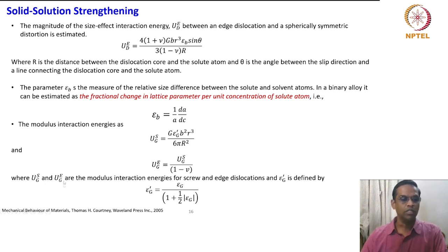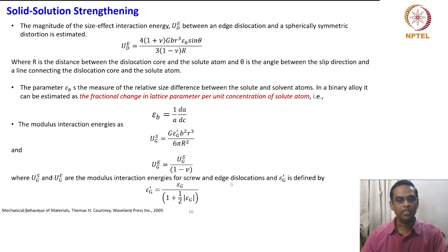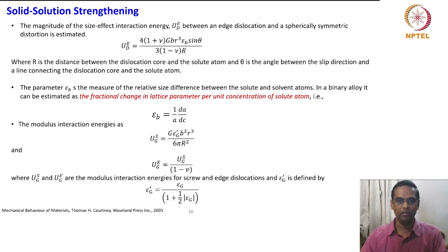U_GS and U_GE are the modulus interaction energies for screw and edge dislocations, and epsilon_G_prime is defined by epsilon_G divided by (1 plus half the modulus of epsilon_G). This is how the interaction energies are derived semi-quantitatively. All you need to know about these expressions are the parameters — what parameters are important and how they are related to the energy. These are the concepts to grasp rather than identifying how the equations are derived. We just need the parameters related to the core idea.